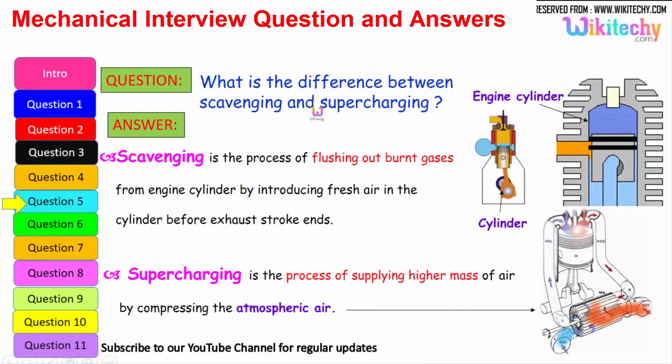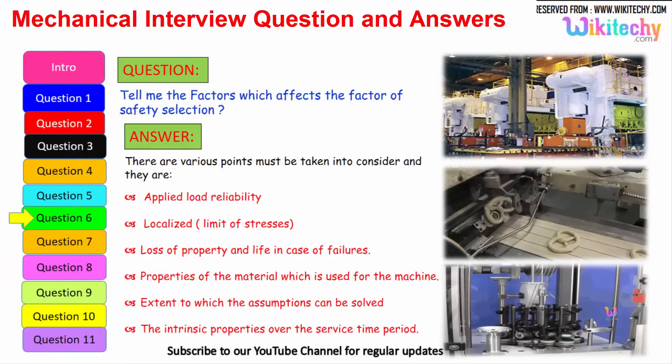Let us move on to the different question. What is the difference between scavenging and supercharging? Scavenging is the process of flushing out the burnt gases from the engine cylinder by introducing fresh air in the cylinder before exhaust stroke ends. Whereas supercharging is the process of supplying high masses of air by compressing the atmospheric pressure. High pressure air is injected into the cylinder to compress the atmospheric air.